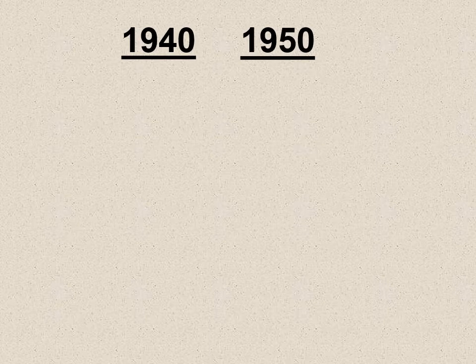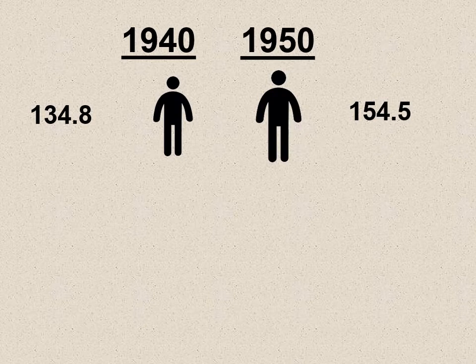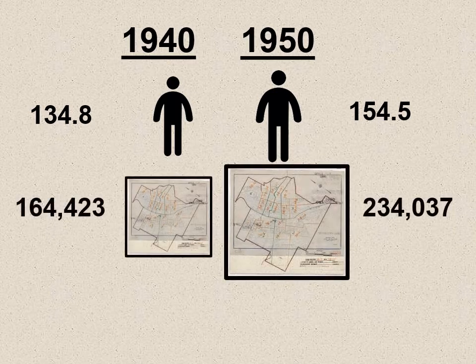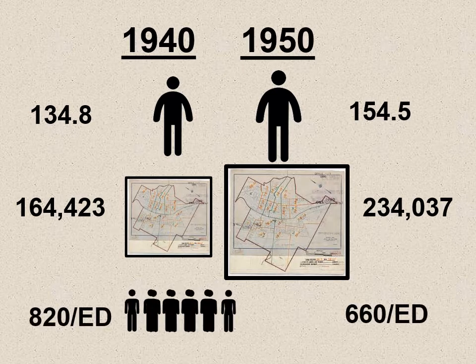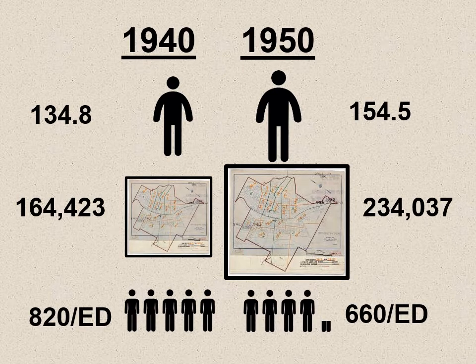I'm going to show you a comparison between enumeration districts in 1940 and 1950. The population of the United States increased by about 20 million people, but an even greater increase occurred in the number of enumeration districts — you can see there's quite a jump. The amount of people per enumeration district was 820 in 1940, and it's going to be much smaller, about 660, in 1950. That's an average. Some EDs have just a handful of people; others may have 2,000 or more.